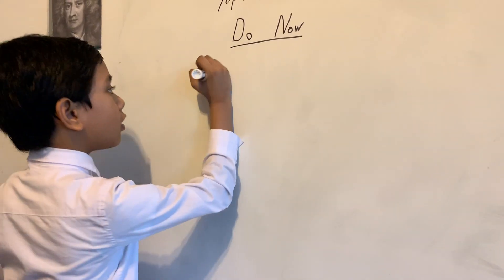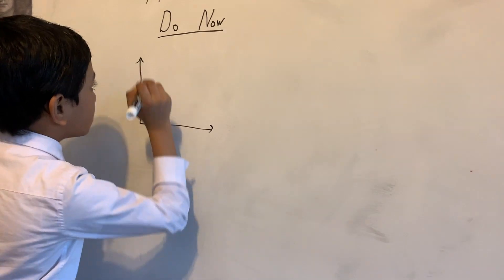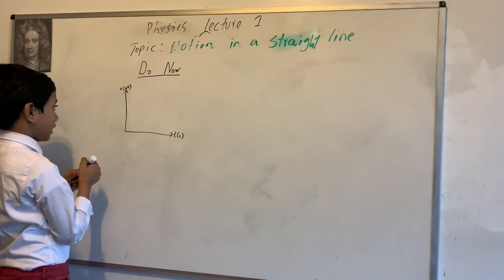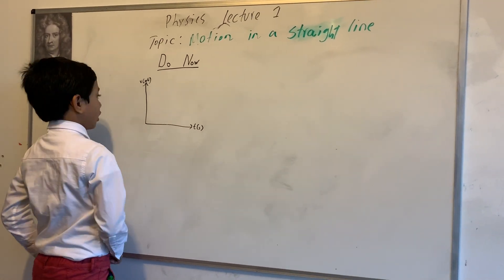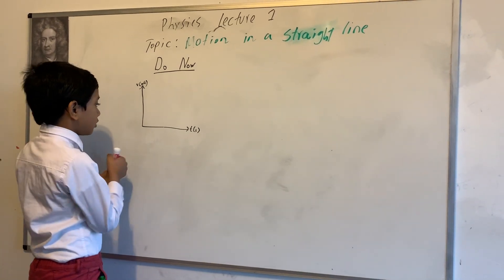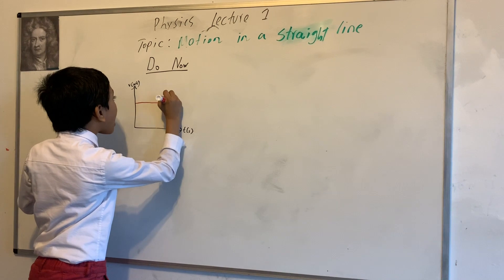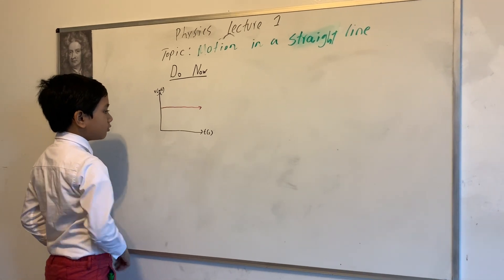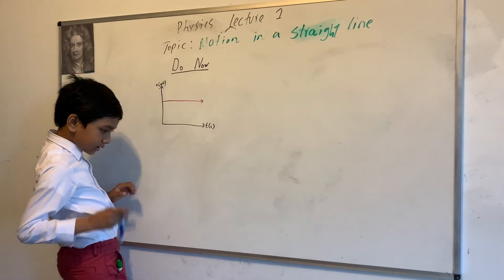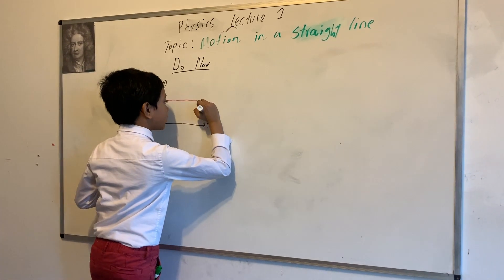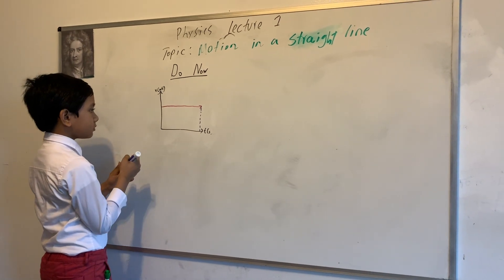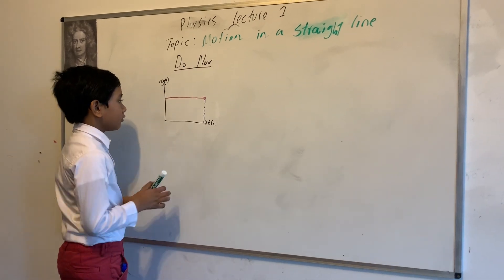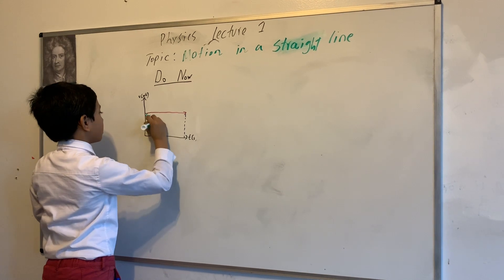First, let's draw a VT graph. Let's draw the graph using a different color. This is when V is constant, so don't draw this for our graph. Let's put an imaginary line in blue. And finally, we have green. Let's see the inside in green.